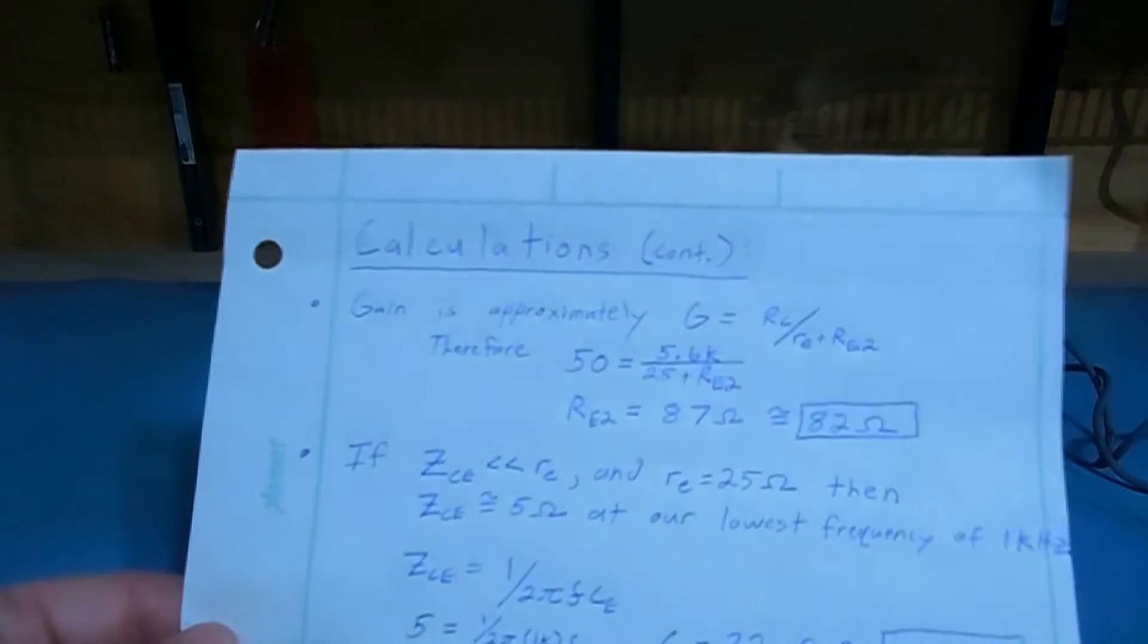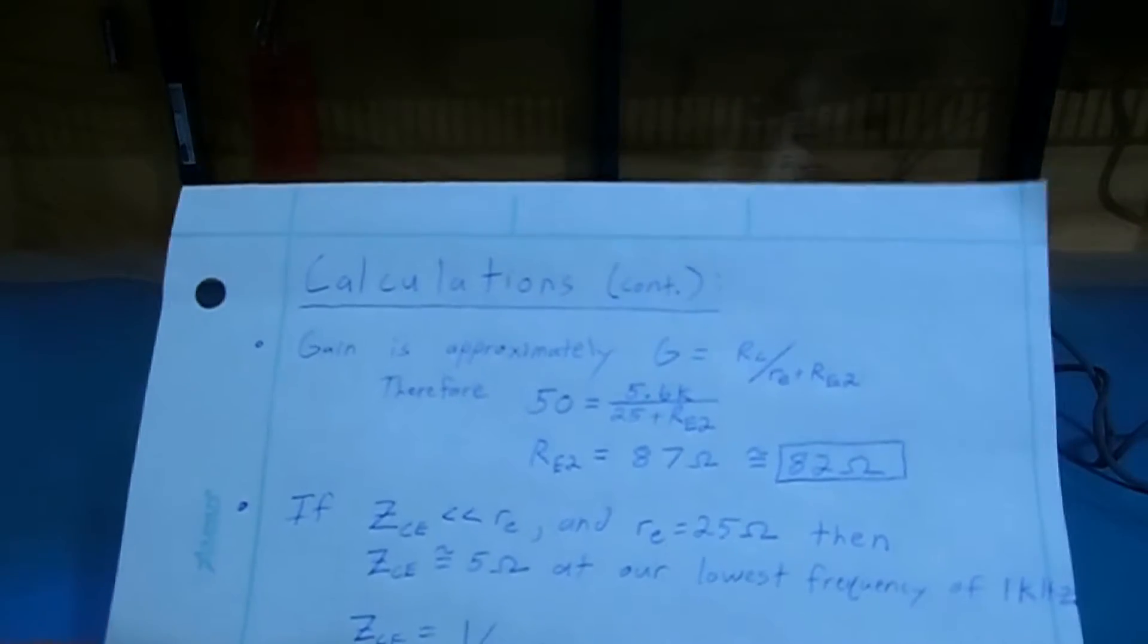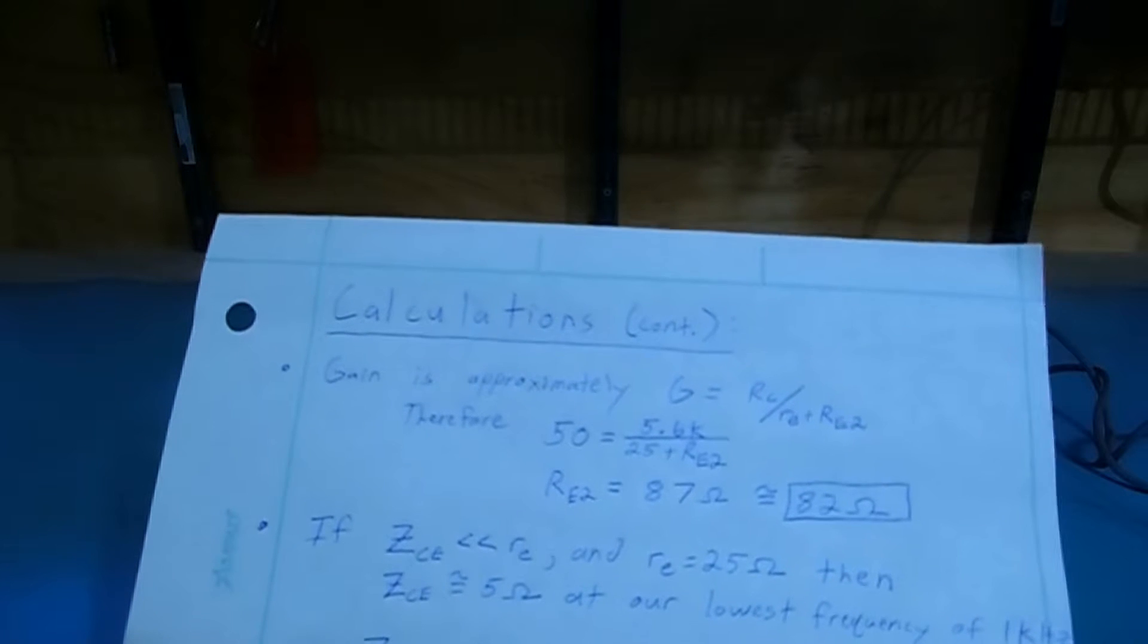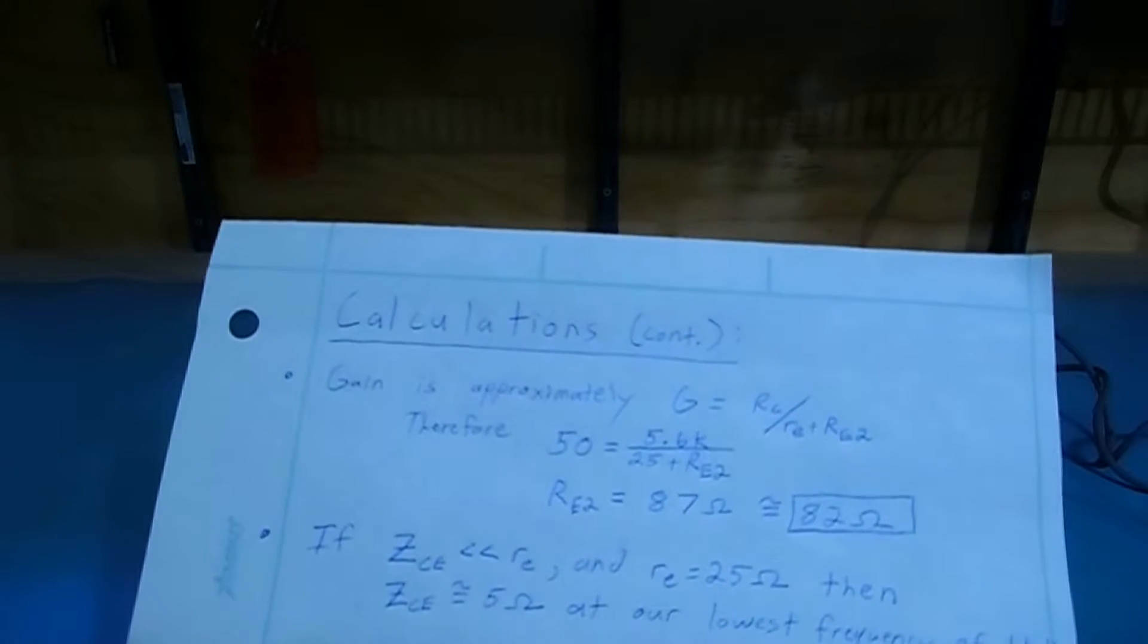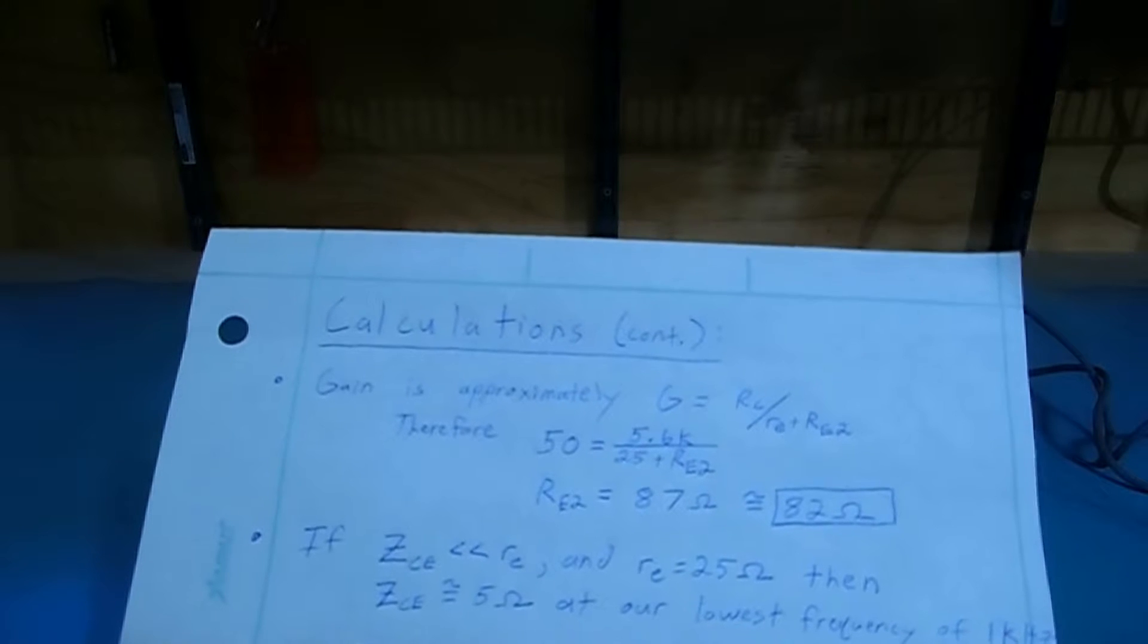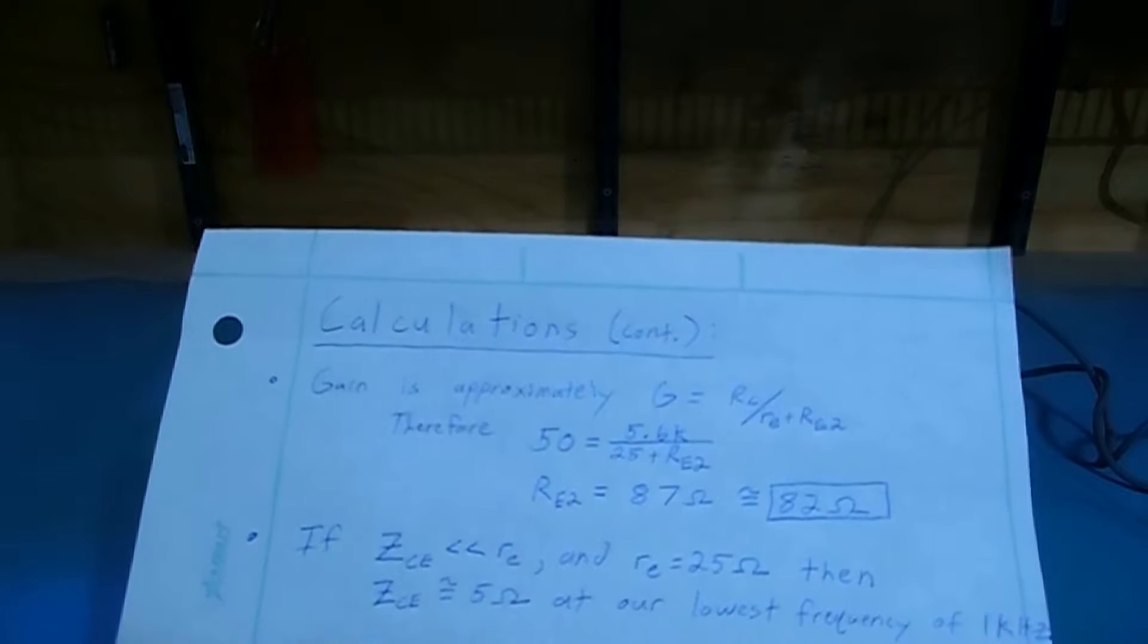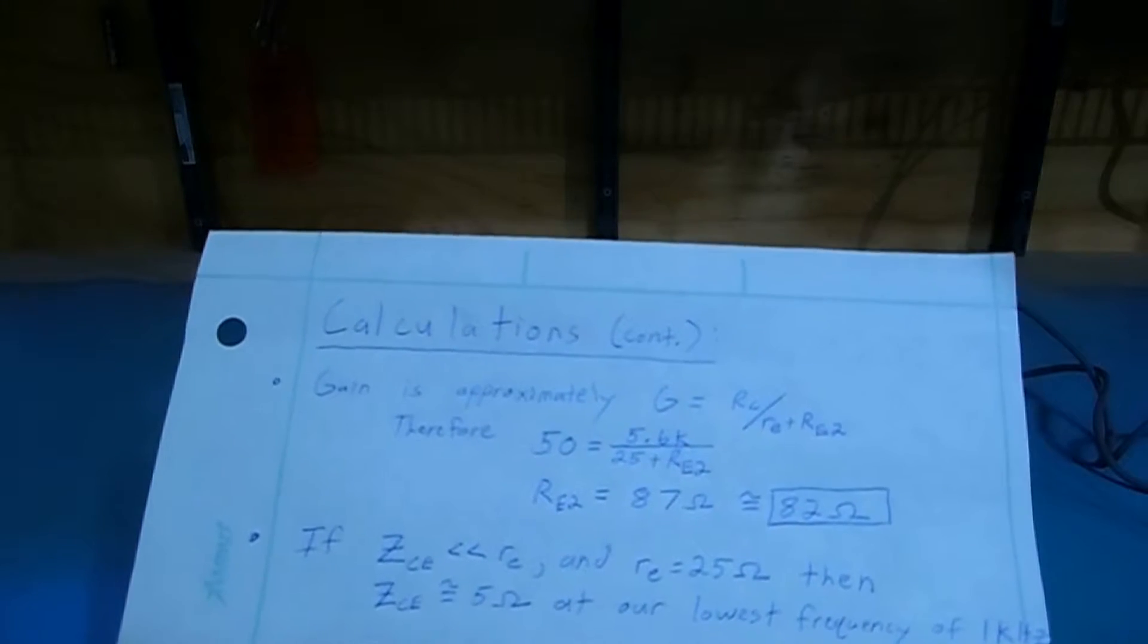And to calculate the final resistor, which is RE2, we simply use the gain equation for a common emitter amplifier, which is gain equals collector resistance divided by emitter resistance for the signal.